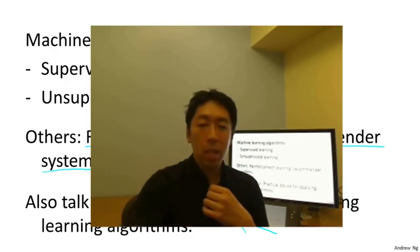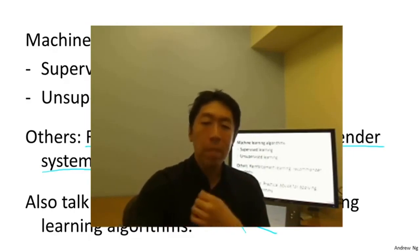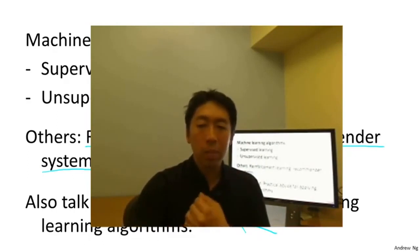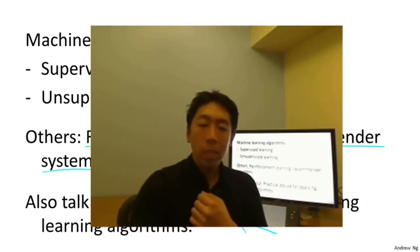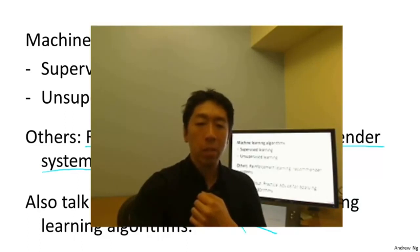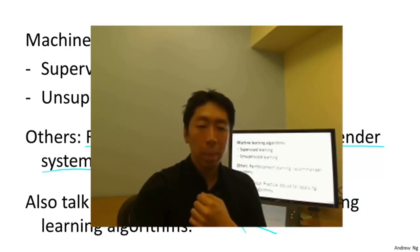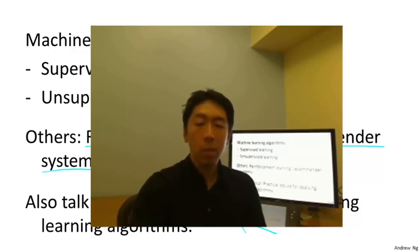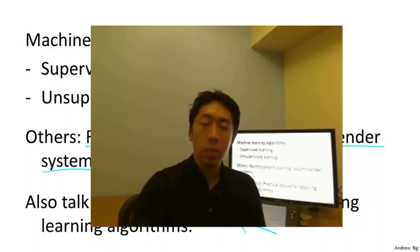So I'm actually going to spend a lot of time teaching you those sorts of best practices in machine learning and AI, and how to get this stuff to work — how the best people do it in Silicon Valley and around the world. I hope to make you one of the best people at designing and building serious machine learning and AI systems. So that's machine learning, and these are the main topics I hope to teach. In the next video, I'm going to define what supervised learning is, and after that, what unsupervised learning is, and also start to talk about when you would use each.